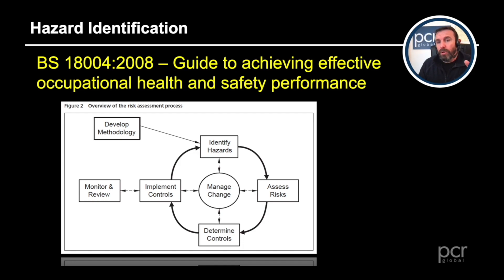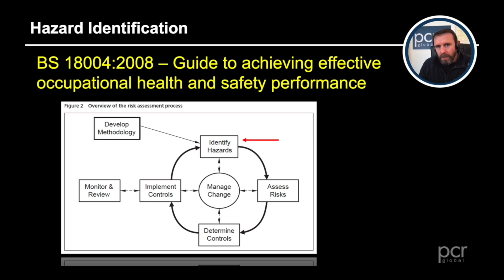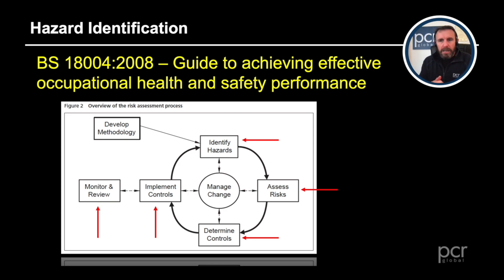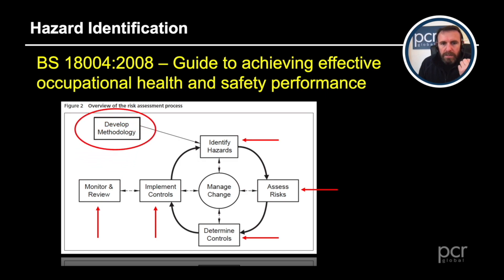British Standard 18004, a guide to achieving effective occupational health and safety performance, provides a great overview of the risk assessment process. You identify the hazards, then assess the risks, then determine the control measures required for the hazards and risks, then implement your controls. Monitoring and review is also a critical step — very often overlooked — and it was also present in the ISO 31000 risk management process.